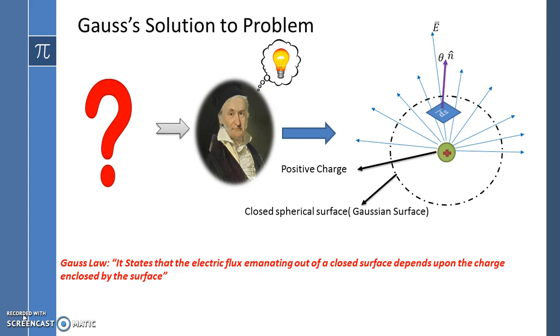Gauss gave solution to this problem which emerged as a law. He replaced the inner sphere by a point charge and the outer sphere by an imaginary closed surface called the Gaussian surface, and he stated that the flux emerging out of the closed surface depends on the charge inside the closed surface and the medium.